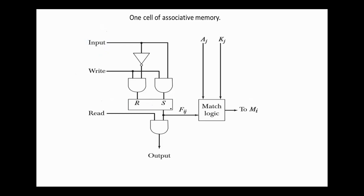The stored bit in the flip-flop is read during the read operation. This part is similar to the memory cell used in random access memories. But in addition, in associative memory each cell has additional match logic, and the circuit has additional logic for comparison.